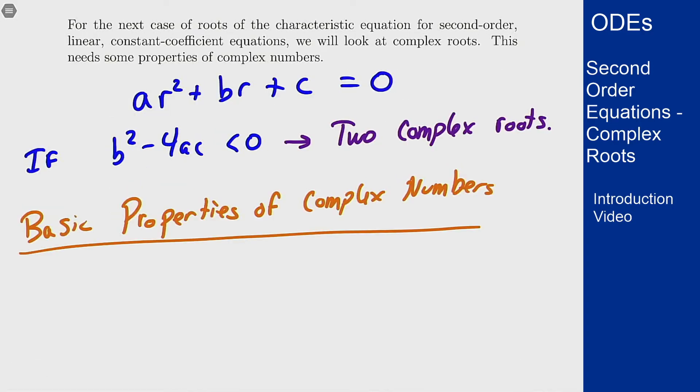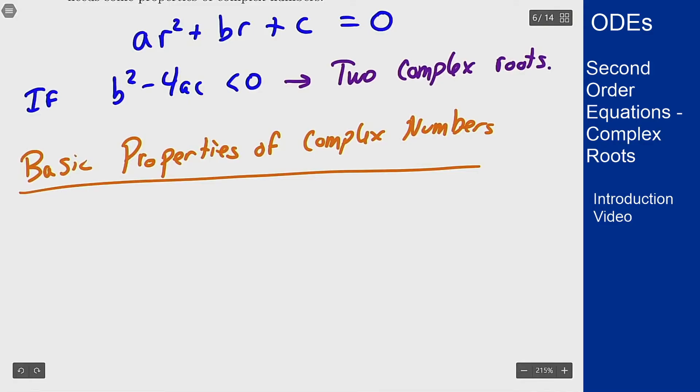What are some basic properties that we need of complex numbers? In general, a complex number is something of the form z = x + iy, where i here is the imaginary unit or the square root of negative one.